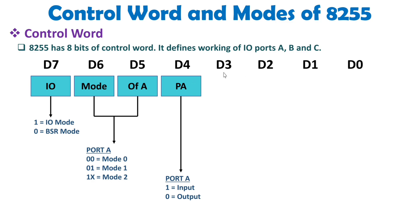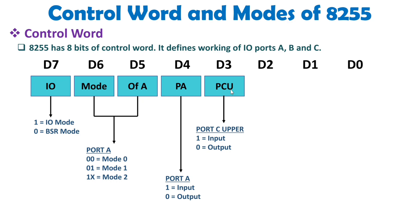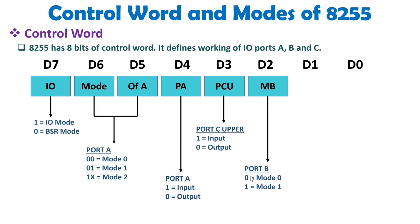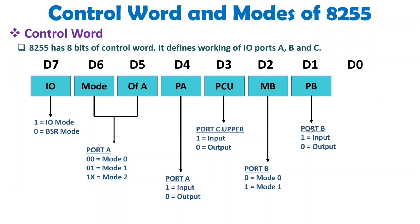D3 bit is there for the upper nibble of port C. If D3 is 1, the upper nibble of port C works as input; if it is 0, the upper nibble of port C works as output. D2 bit defines the mode of port B: if it is 0, port B is in mode 0; if it is 1, port B is in mode 1. D1 bit justifies whether port B is an input or output port — if 1, it is input; if 0, it is output.